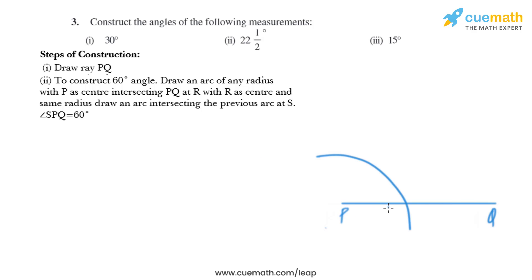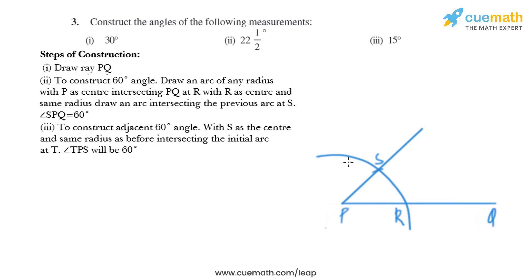We put the compass at P, take any radius, and draw an arc that intersects PQ at R. Then we put the compass at R and, using the same opening, draw another arc intersecting the initial arc. We name that point S, then join P and S to get angle SPQ equal to 60 degrees.